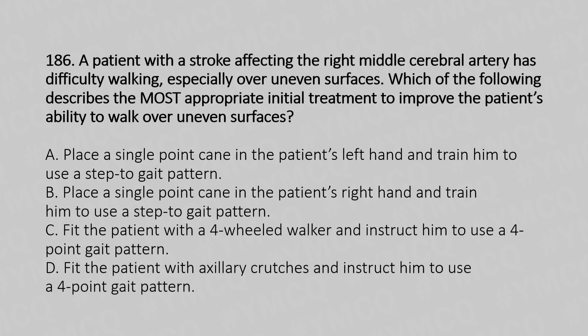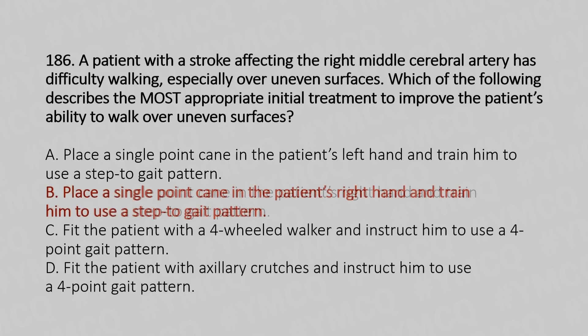Option A: place a single point cane in the patient's left hand and train him to use a step-to gait pattern. Option B: place a single point cane in the patient's right hand and train him to use a step-to gait pattern. Option C: fit the patient with a four-wheeled walker and instruct him to use a four-point gait pattern. Option D: fit the patient with axillary crutches and instruct him to use a four-point gait pattern. The answer is Option B.